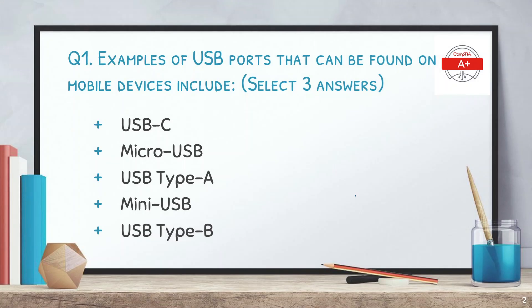The first question is: examples of USB ports that can be found on mobile devices include — select three answers. The options are USB-C, Micro USB, USB Type A, Mini USB, and USB Type B.